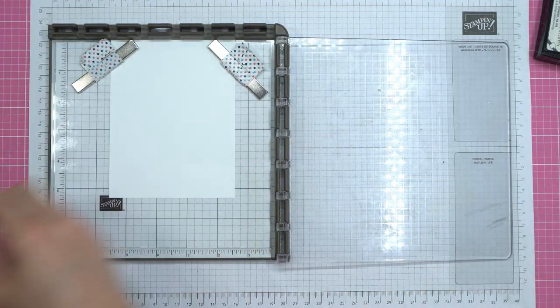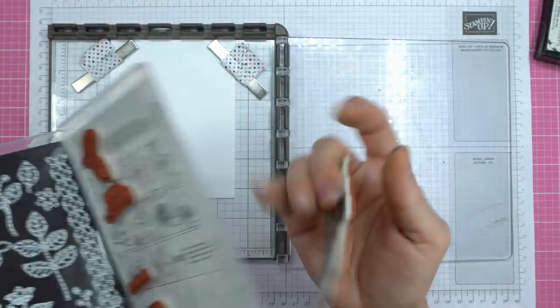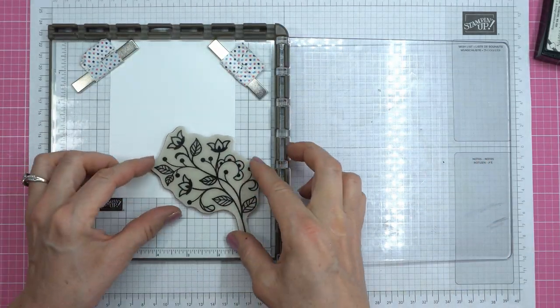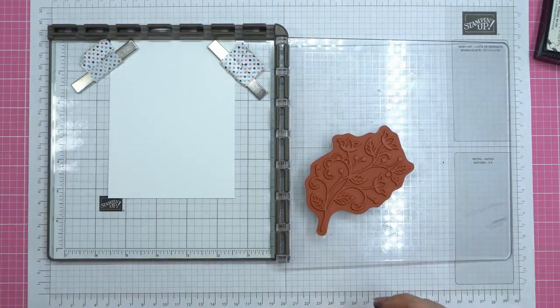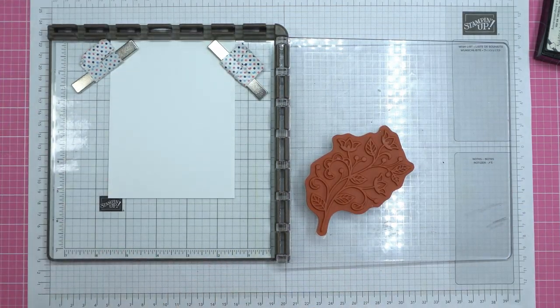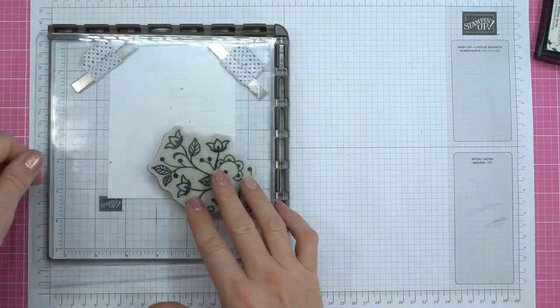Now I'm going to stamp the inside. And if you use your Stamparatus, you can stamp all four of your inserts for all four of your cards. All you got to do is take the paper out, put a new piece of paper in, right? Because we have four cards at this point. That's why we cut so many strips.